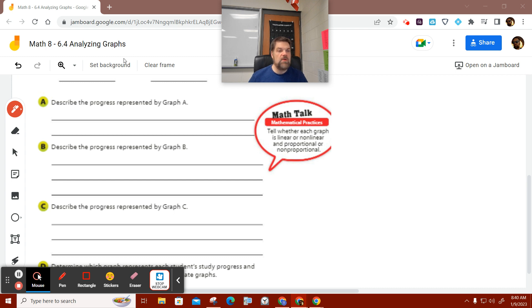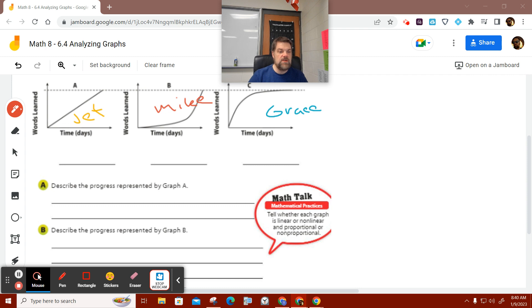Oh, you know what? I wrote the names down. They're supposed to go here. So this is Jet. This is Mike. And this is Grace. Sorry.